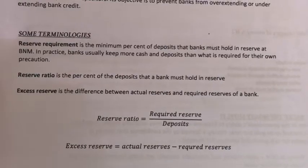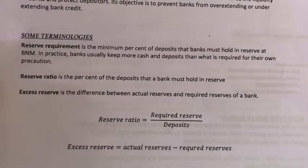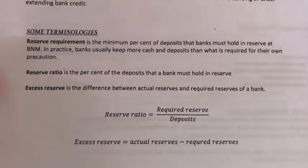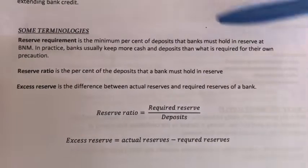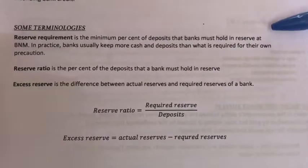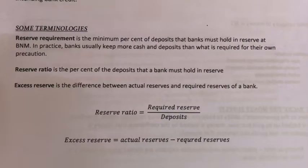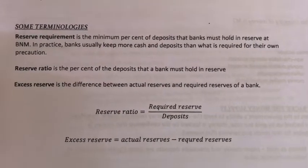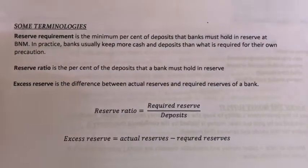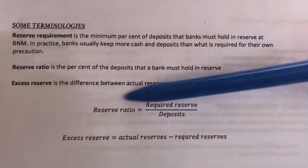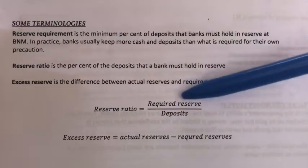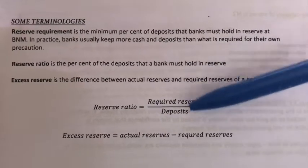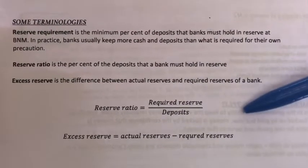So now let's learn some terminologies. Every bank has a reserve requirement to meet — to enhance their liquidity and to protect their depositors. Reserve requirement is basically the minimum percent of deposits that banks must hold in reserve at the central bank. Usually the banks keep more cash and deposits than what's required for their own precaution as well. And then we have the reserve ratio, which is the percent of the deposits that a bank must hold in reserve — as you can see from the formula here. In other words, it is the total amount of reserve required to be saved by commercial banks divided by the total deposits, times 100 to get the percentage.